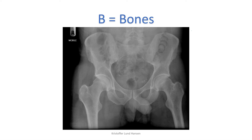Now to B for bones — the most obvious part of a skeleton x-ray. Here you start by tracing the cortical outline of the bones to look for any breakage in this line. You start with one femur and trace the cortex all the way around it, then you do the other femur. Afterwards, trace the pelvic ring for any breakage of the cortical line, then you do the obturator rings, and lastly trace the whole outside of the pelvis itself.